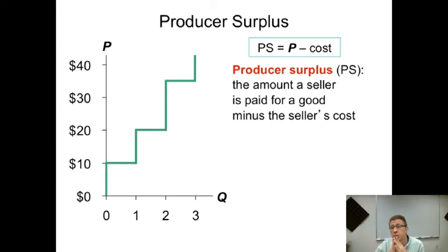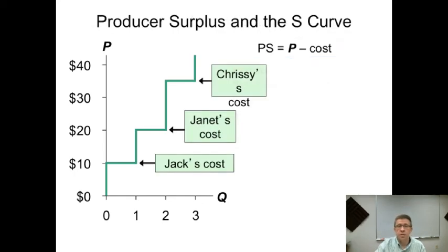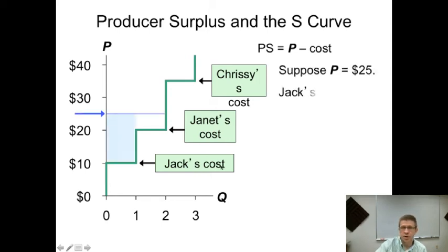So what's our producer surplus? It's the difference between the amount a seller is paid and the amount the seller needs to be paid. So the amount the seller is paid for a good minus the cost for the good, as they refer to it. I like to, instead of saying cost, I think of it as the minimum they need to sell the product.